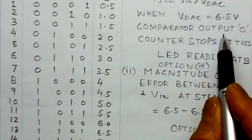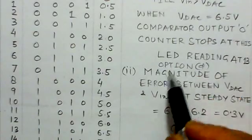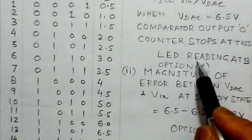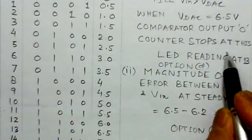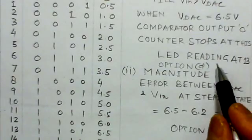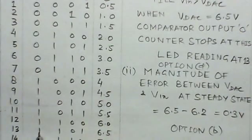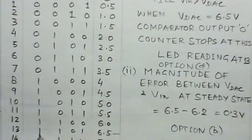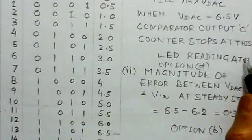And the comparator output is zero, then counter stops at this point because the clock is not applied to the counter. And now the LED reading would be, you can see at 6.5 the LED reading would be at 8 plus 4, twelve and thirteen. So LED reading would be at thirteen. That is option D.